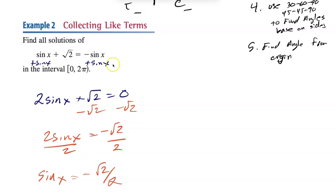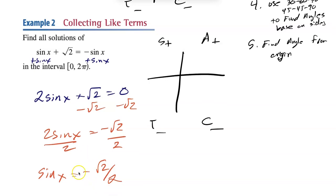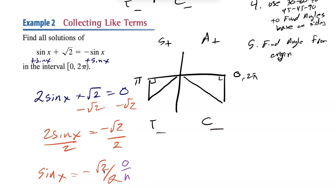Eventually you'll be able to do this in your head, but for now let's follow the process. All Students Take Calculus — sine is positive in A and S, and negative in T and C. We have a negative value this time, so we're drawing triangles in quadrants 3 and 4. Using SOHCAHTOA with opposite √2 over hypotenuse 2 — anytime you see √2/2, it's automatically 45 degrees because they just rationalized 1/√2. So both reference angles are 45 degrees.